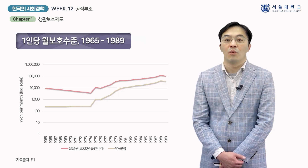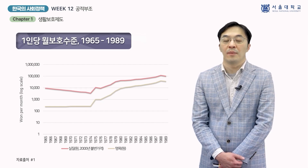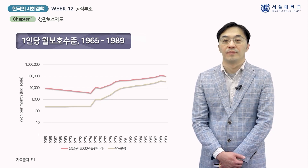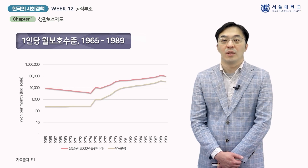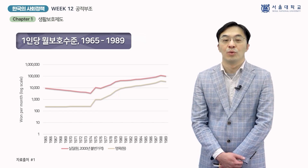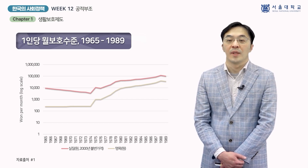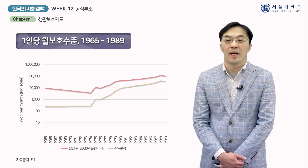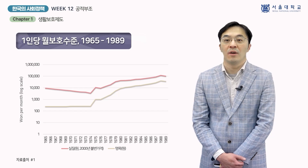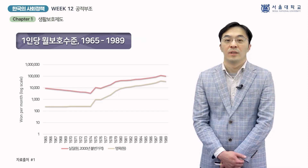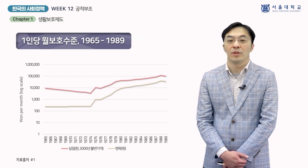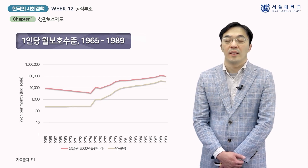2020년 가격으로 평가한 1인당 월 보호 수준은 1965년 약 9,300원에서 1974년 3,400원 수준으로 10년간 꾸준히 그리고 빠르게 하락했습니다. 명목급여는 그 이후 1980년대 초반까지 빠르게 증가했습니다. 물가 상승을 조정하더라도 그렇습니다. 1970년대 중반부터 1980년대 초반까지 실질 보호 수준이 강화된 시기는 양곡 지급량이 늘고 약간의 현금까지 지급되기 시작한 때입니다. 1975년부터 1977년까지 밀가루 양이 40% 늘었고 1978년 약간의 쌀과 보리가 추가로 지급되었습니다. 또한 1979년부터 약간의 연료비가, 1980년부터 약간의 부식비가 추가됩니다.